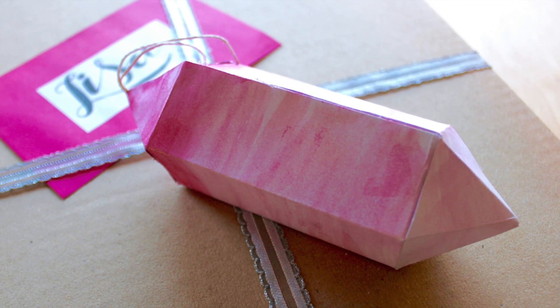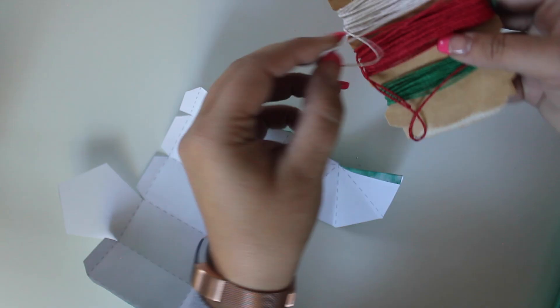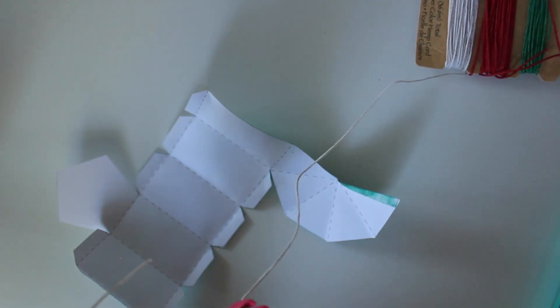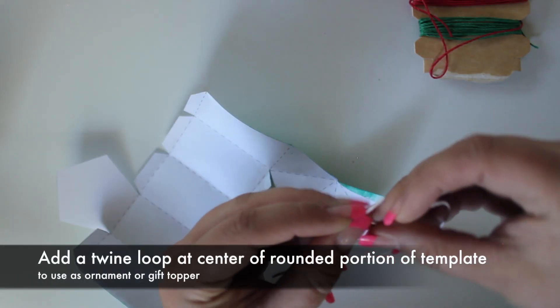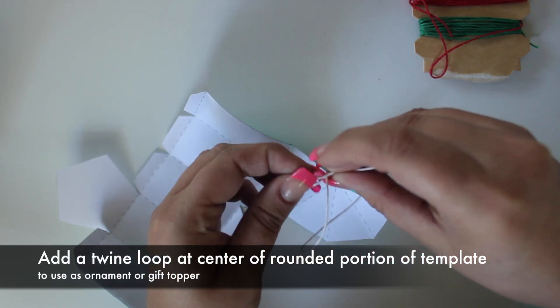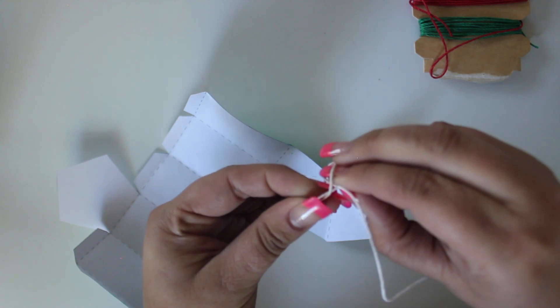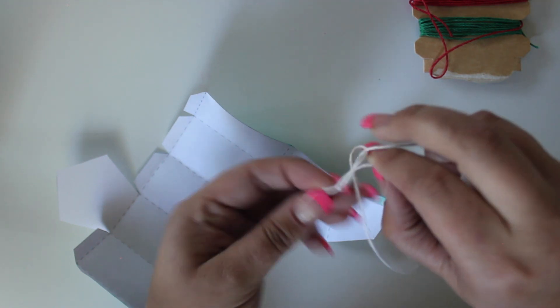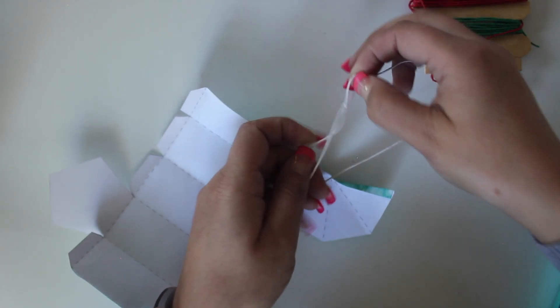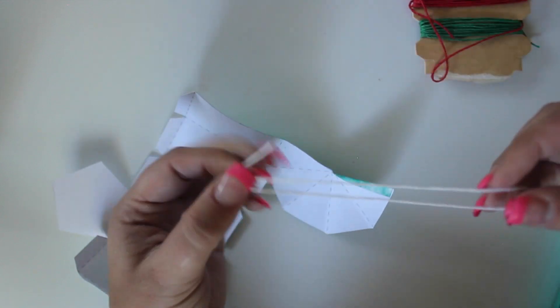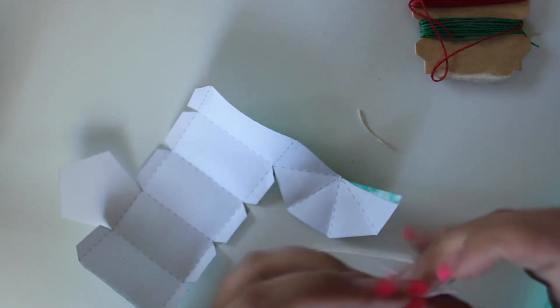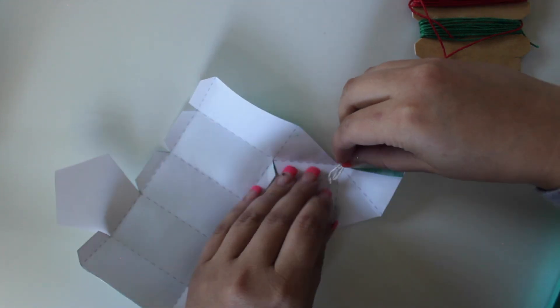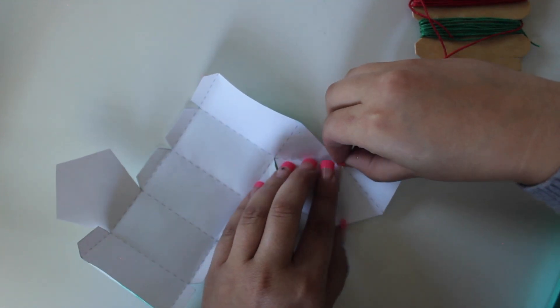You can also turn these into ornaments or gift toppers by adding twine or ribbon to the top. After creasing along the dotted lines, glue a loop of twine to the center point of the rounded area of the template. It's a good idea to tie a knot in the twine first to prevent it from accidentally sliding out. Keep the loop out of the way as you continue to fold and glue the gem.